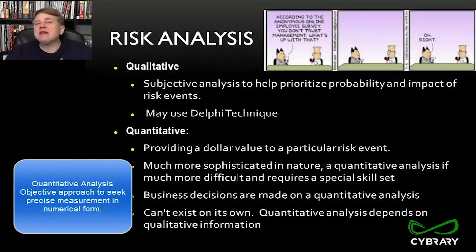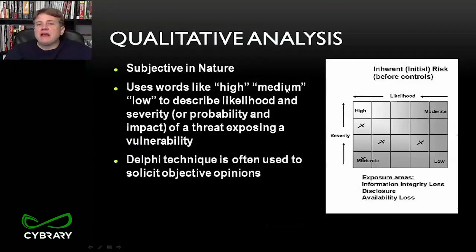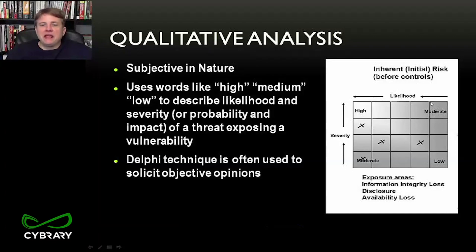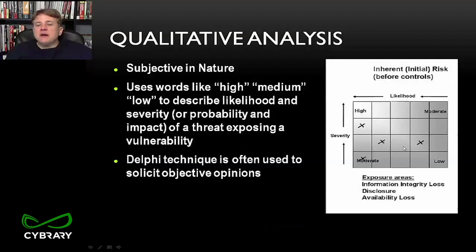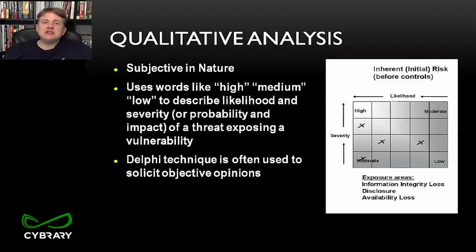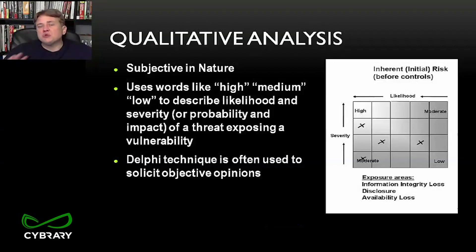Qualitative rankings don't tell you how much money to spend, but they do help prioritize. A lot of times with qualitative analysis, we use something called a probability and impact matrix, or severity and likelihood chart. Likelihood is like probability; severity is like impact. Certain risks have high severity and high likelihood, some have lower severity but high likelihood, and so on. This is a subjective chart your organization creates based on its internal structure.